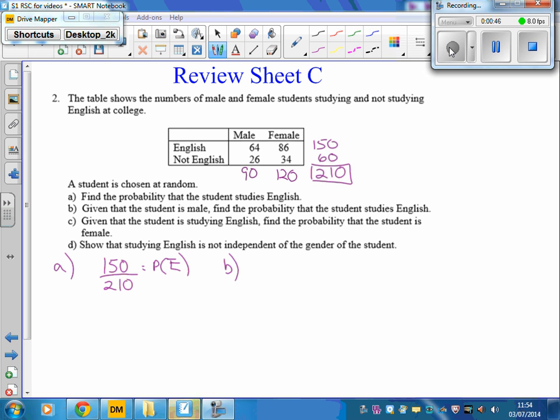Part B, given that the student is male, so we're only interested in male students. There are 90 male students. Find the probability that the student studies English. There are 64 students which are male and studying English, so it's 64 out of 90, which is equal to the probability that the student is male given that they study English.